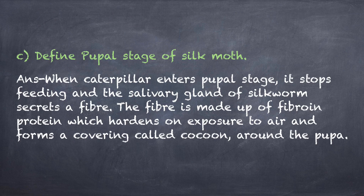C part: Define the pupal stage of silk moth. Answer: When a caterpillar enters the pupal stage, it stops feeding and the salivary gland of the silkworm secretes a fiber. The fiber is made up of fibroin protein which hardens on exposure to air and forms a covering called cocoon around the pupa.